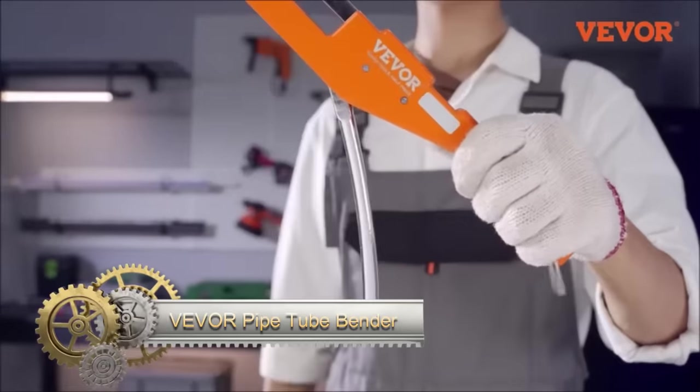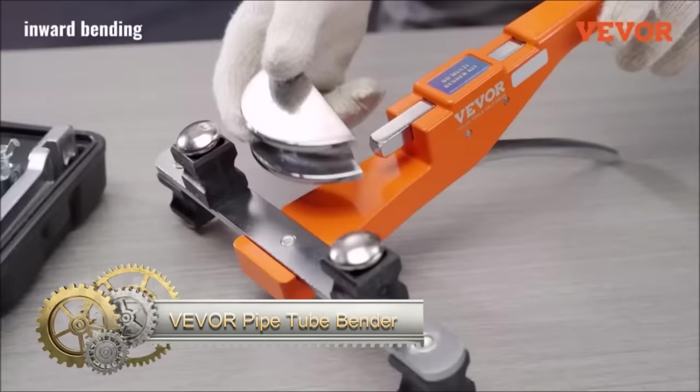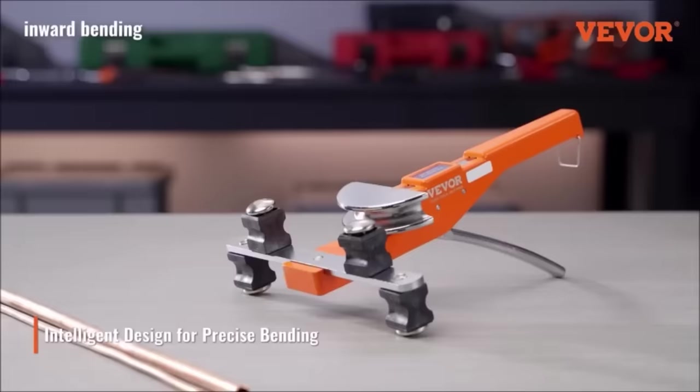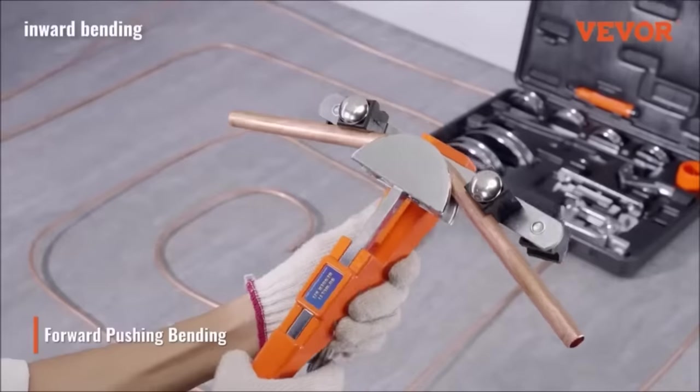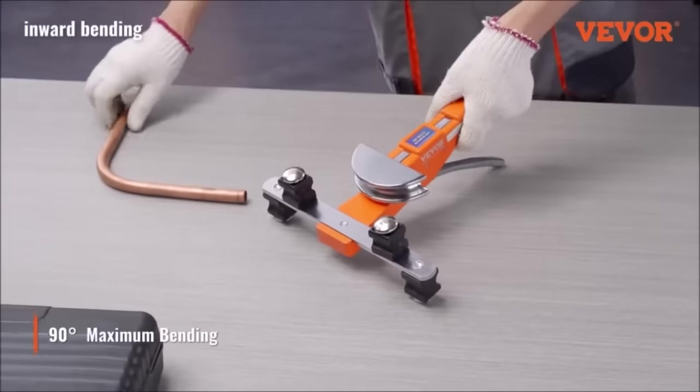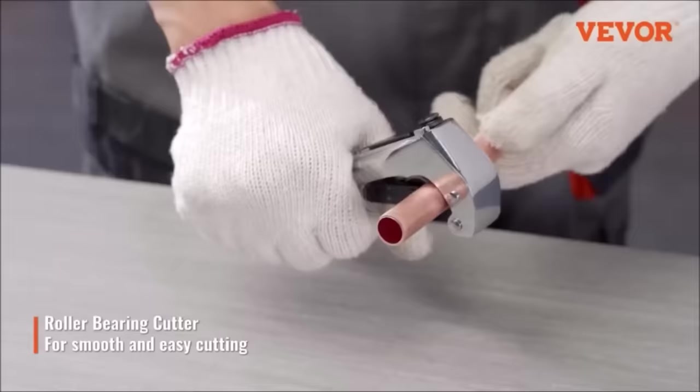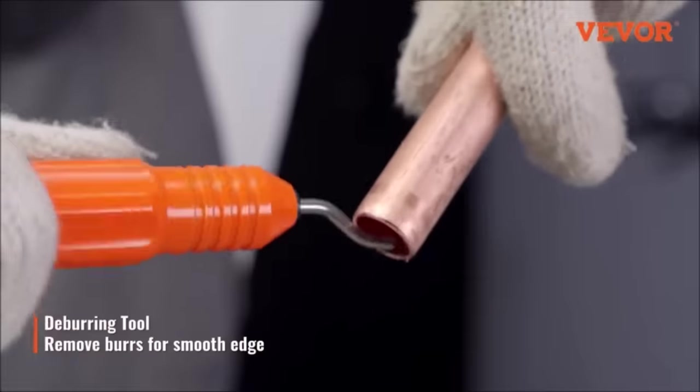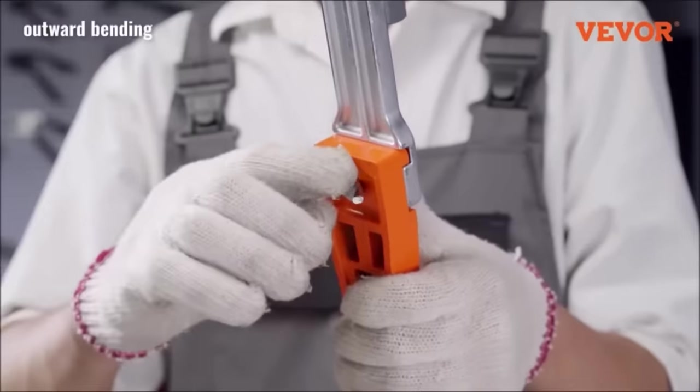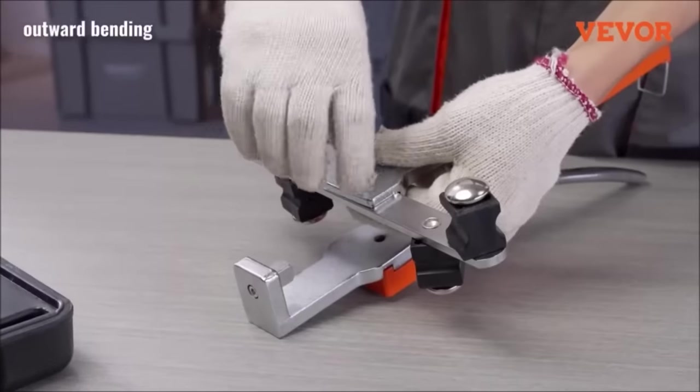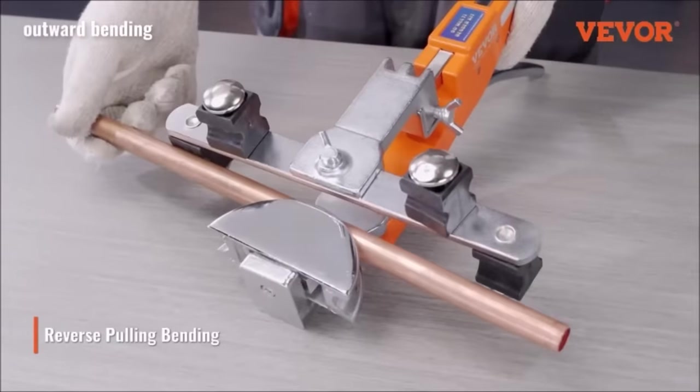The Vevor Pipe Tube Bender Conditioning Machine is a versatile and durable tool suitable for various tasks. It excels at bending copper, aluminum, and thin-walled steel tubes with precision. This machine is ideal for making accurate bends in pipes used in plumbing, HVAC, and other applications. With a compact design and ease of use, it comes equipped with a range of dies to accommodate different pipe sizes and materials. Notably, the machine features a reverse bending capability, enabling pipes to be bent in both directions.